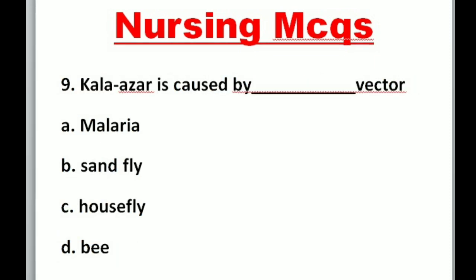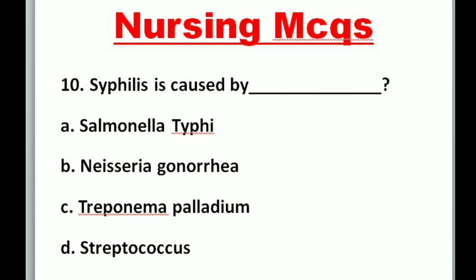Question 9: Leishmaniasis (Kala-azar) is caused by — A. Malaria, B. Sandfly, C. Housefly, D. [other]. Correct option is B: Sandfly.